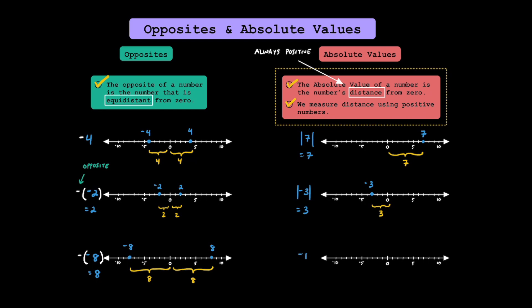What if we have something a little trickier, like the absolute value of negative 1, but we take the opposite of the absolute value of negative 1? First, let's plot negative 1 on our number line — it's right here to the left of 0. These bars around this negative 1 mean find the absolute value of negative 1, which is just 1 because it's 1 unit away from 0. That leaves us with the opposite of 1, and the opposite of 1 is just going to be negative 1. Whenever you see these types of problems, you always work your way out from the inside.